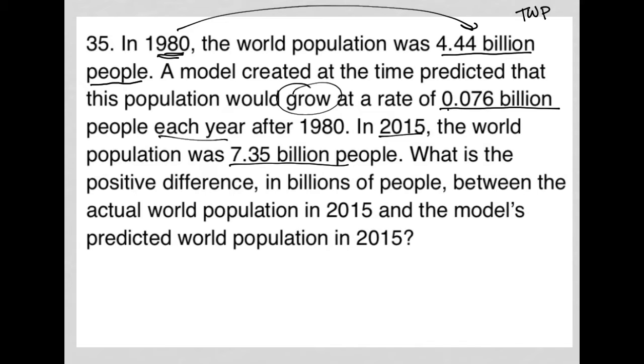What is the positive difference in billions of people between the actual world population in 2015, which was 7.35, and the model's predicted world population in 2015? Okay, so how do we get to the prediction?